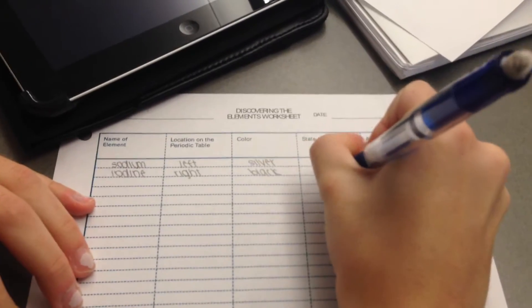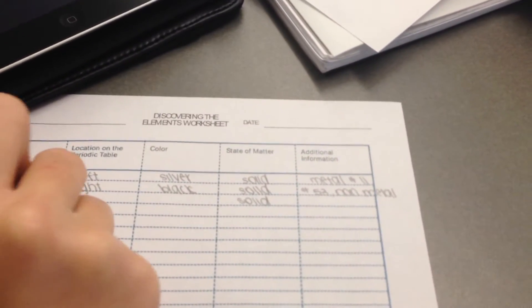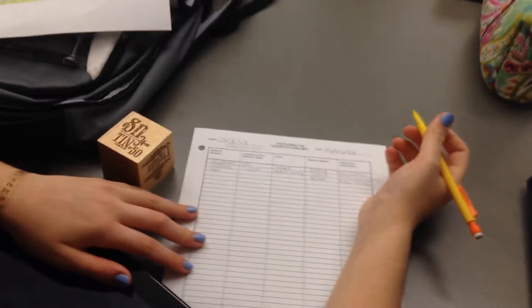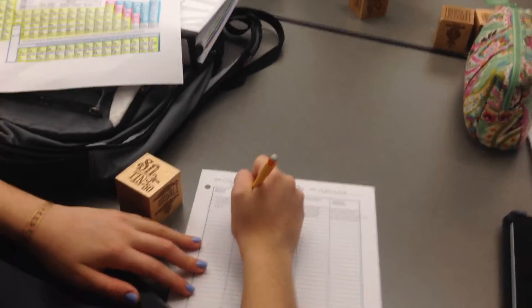They're writing down the element name, location, right or left, the color, what state of matter it's in, and any additional information such as the atomic number which is kind of new to them. They're also writing if they know if it's a metal or non-metal based on where it's located on the periodic table.